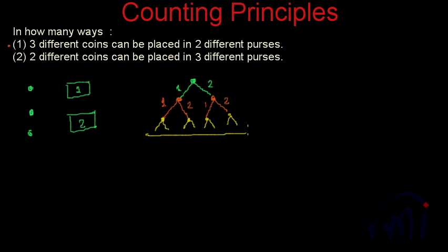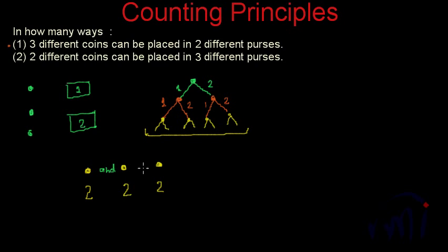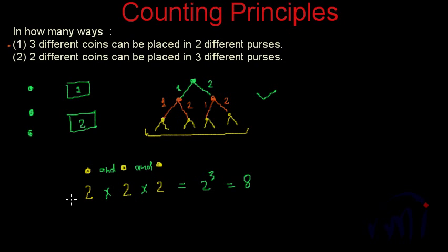So there are a total of eight different ways in which these three coins can be placed in two different purses. How do we calculate it? For the first coin we have two choices, for the second coin also two choices, and for the third coin also two choices. Since all three coins must be placed in one of the purses, these tasks are connected by AND, so we multiply the choices: 2 × 2 × 2 = 2³ = 8. This is the diagrammatic representation of the process.